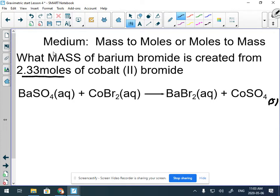So we have more stuff to worry about in this question. It says we have 2.33 moles of cobalt bromide. Well, there's cobalt bromide. I'm going to write down 2.33 mole cobalt bromide. Then it's saying what mass of barium bromide is created?